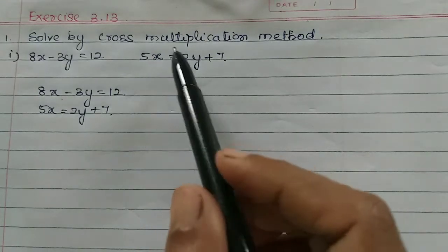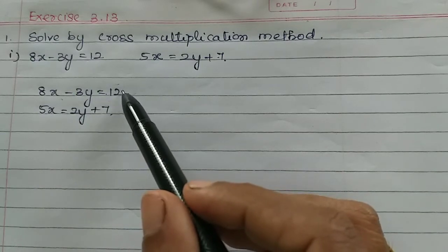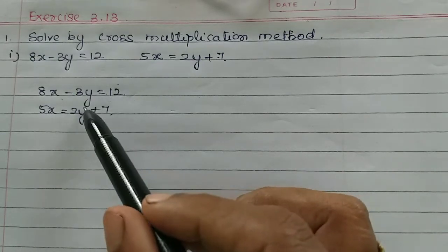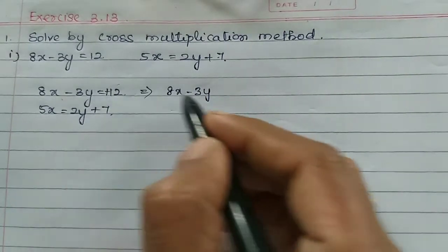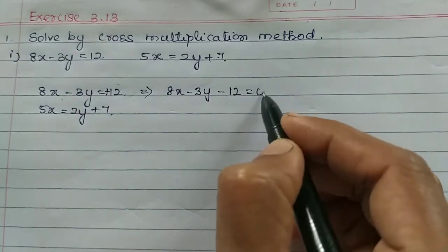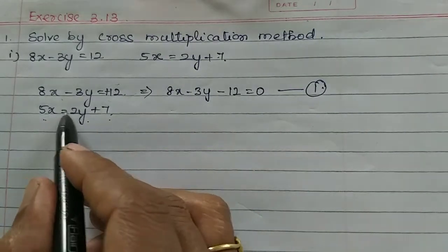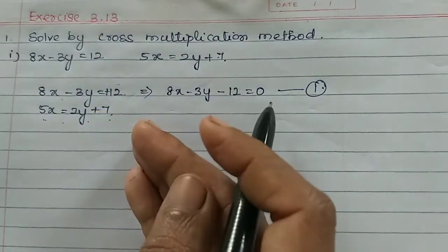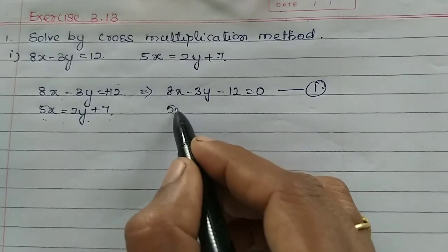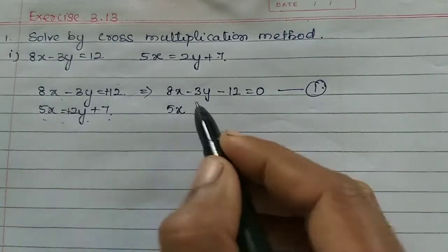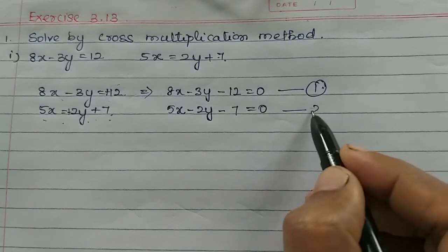So what do we do with the cross multiplication method? For the second equation, 5x is equal to 2y plus 7. We rearrange it: the left-hand side becomes 5x minus 2y minus 7, which is equal to 0. This is the second equation.